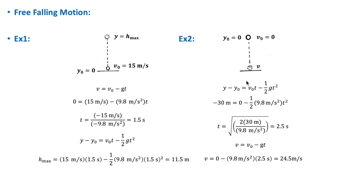Using the kinematic equation for displacement, we substitute y − y₀ and v₀ = 0 to get the time equal to 2.5 seconds. Then using the velocity equation and substituting for t, we get the velocity just before hitting the ground: v = −24.5 m/s.